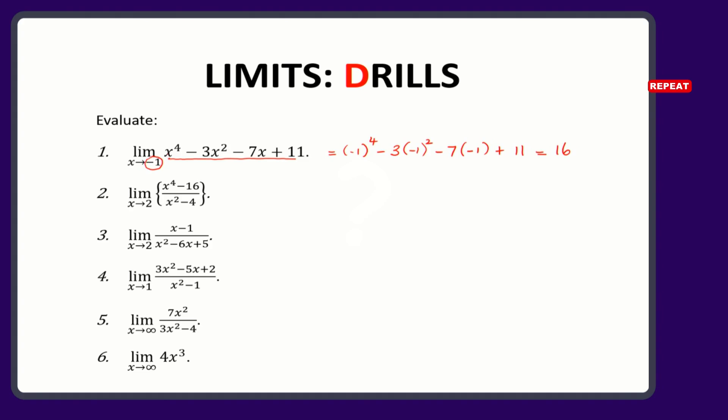That whole function will get close to 16 as x gets closer and closer to negative 1. Question 2 is a bit different. It is rational — there is something at the top and something at the bottom. If you look at it carefully, you'll notice there is a difference of two squares.